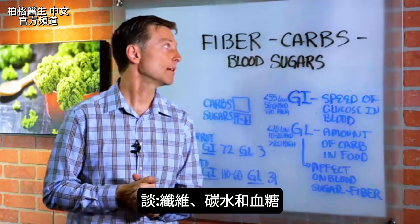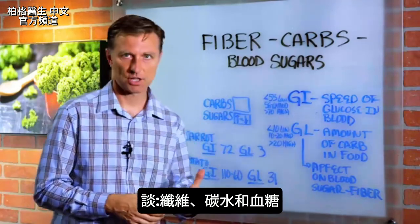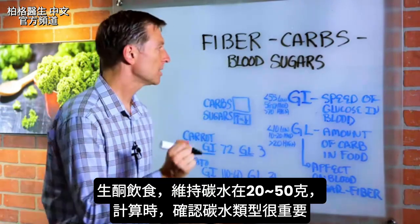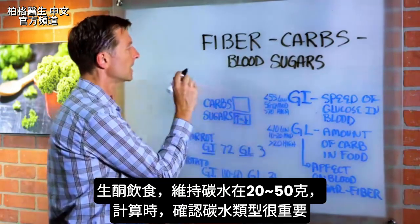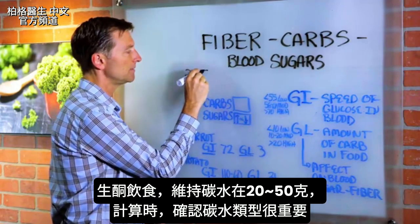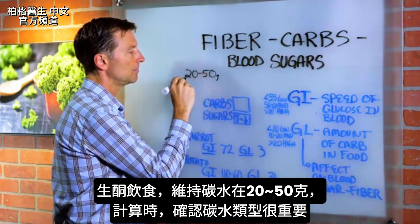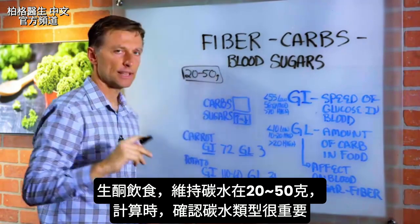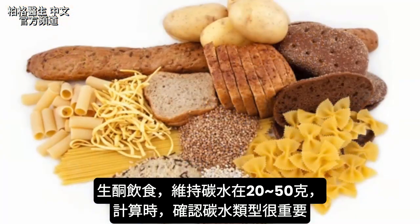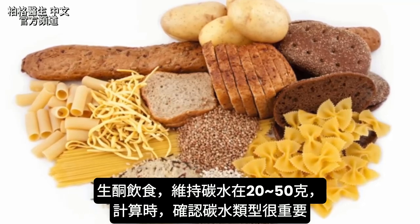Hey guys. In this video, we're going to talk about fiber, carbs, and blood sugars. Now, typically when you're doing the keto plan, you want to keep your carbs between 20 and 50 grams. But it's very important to look at the type of carb that we're using when we're doing the calculations.